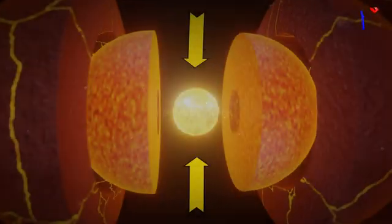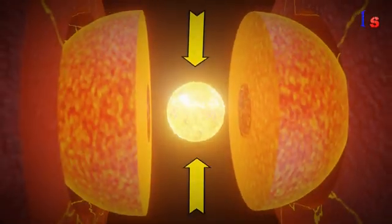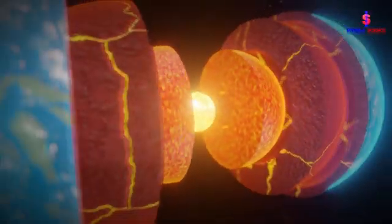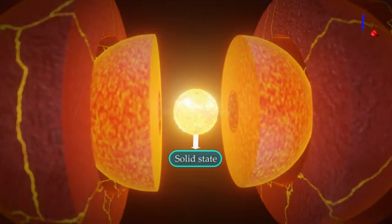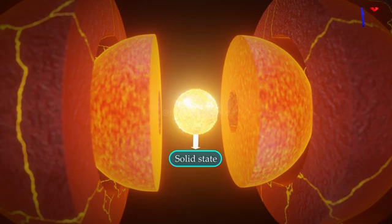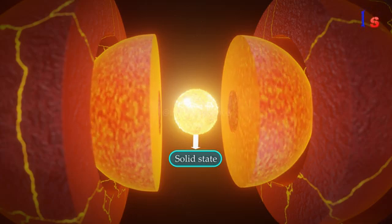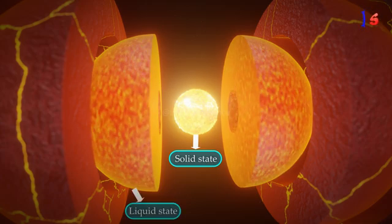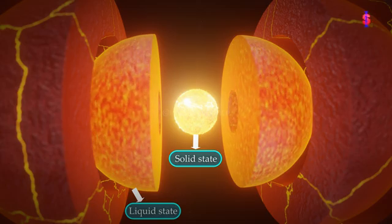The main reason for this is the pressure that is exerted at the center of the Earth. Due to the higher pressure at the center, the inner core remains in a solid state despite being hotter, while the outer core remains in a liquid state even at lower temperature.